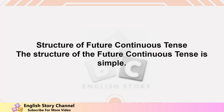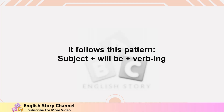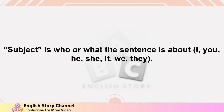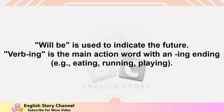Structure of Future Continuous Tense. The structure is simple. It follows this pattern: Subject + will be + verb with -ing. The subject is who or what the sentence is about: I, you, he, she, it, we, they. 'Will be' is used to indicate the future. The verb with -ing is the main action word, e.g., eating, running, playing.